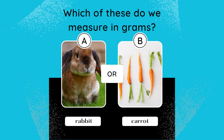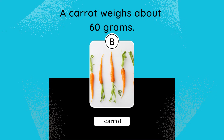Which of these do we measure in grams? A. Rabbit, or B. Carrot? The answer is B. Carrot. A carrot weighs about 60 grams.